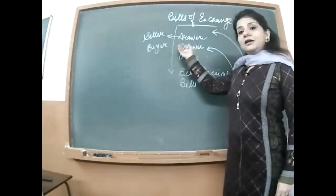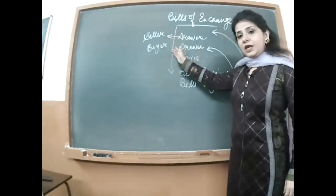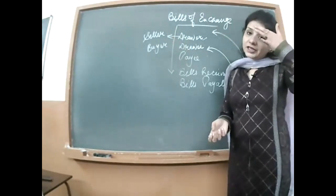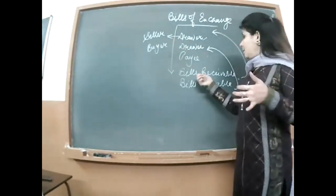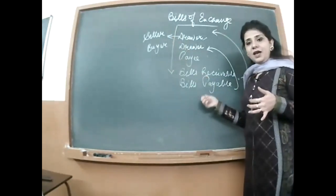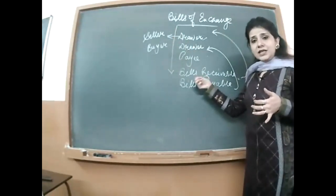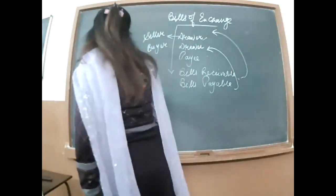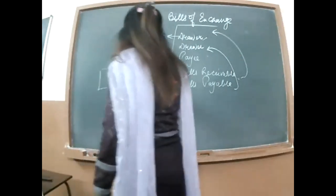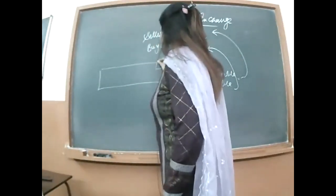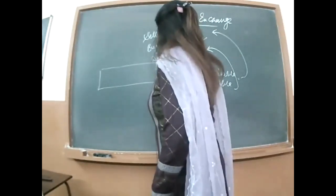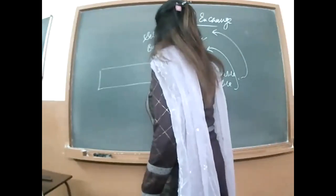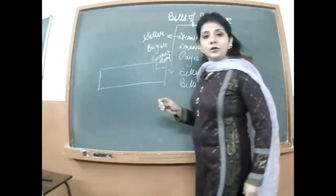Hum uski oral statement pe bharosa nahi karte, so hum use bolte hain ki return mein ek written promise de. Voh return promise ko buyer bolega 'bills payable' aur seller use 'bills receivable' bolega. Basically it is a form of document, aur iske upar ek revenue stamp lagti hai. Revenue stamp lagane se voh ek legal document ban jata hai.